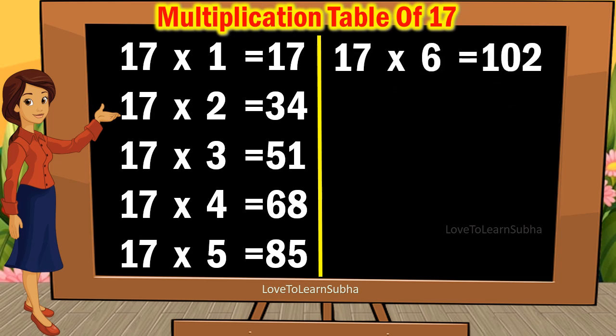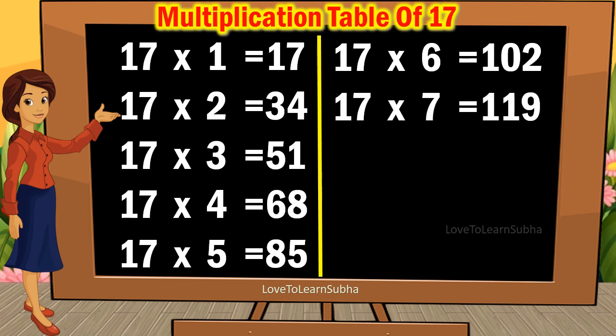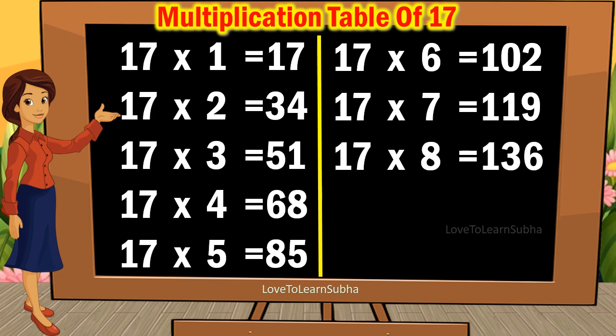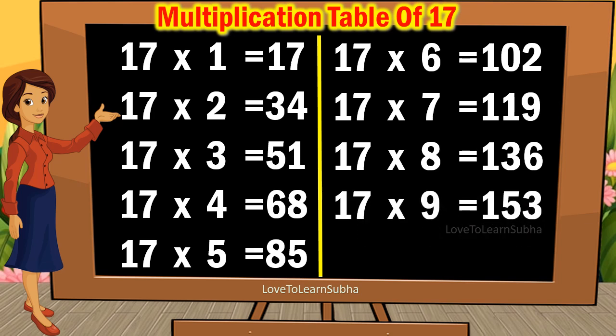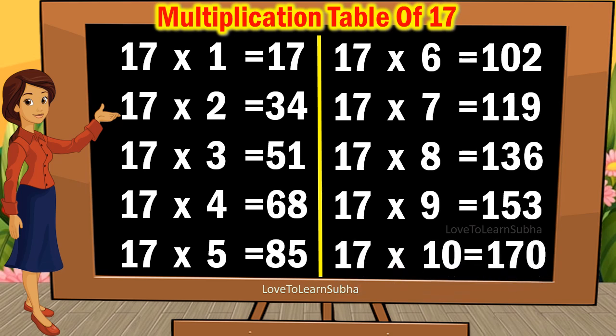17 sixes are 102, 17 sevens are 119, 17 eights are 136, 17 nines are 153, 17 tens are 170.